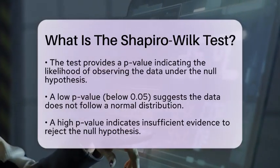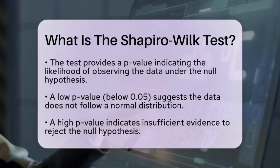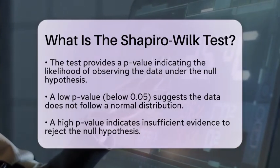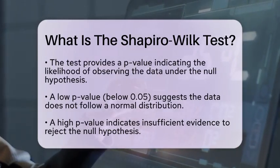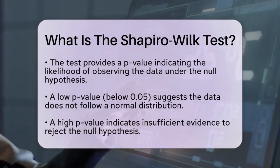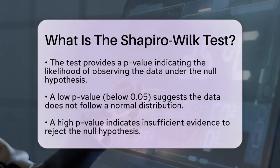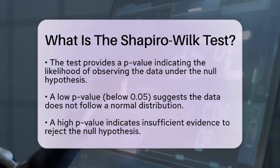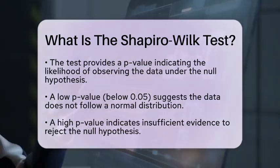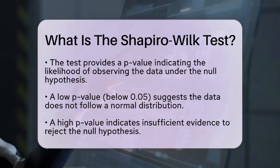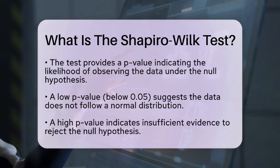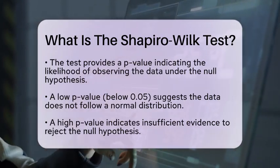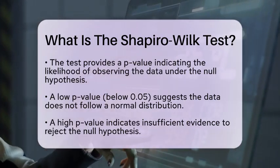The output of the test includes a p-value, which indicates the probability of observing the data if the null hypothesis is true. A low p-value, typically below a threshold of 0.05, suggests that the data does not follow a normal distribution. Conversely, a high p-value indicates that there is not enough evidence to reject the null hypothesis.